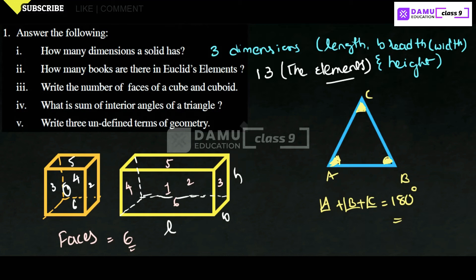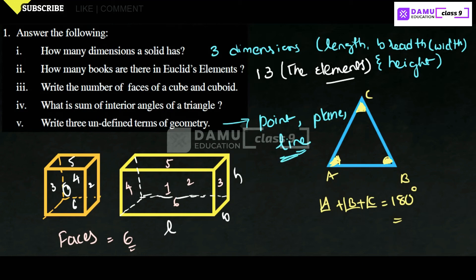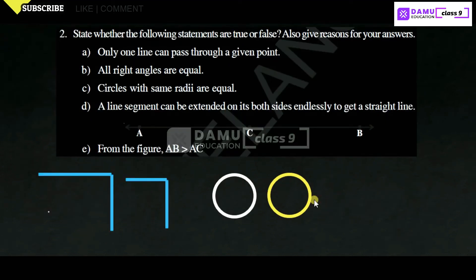Next: write and define the three undefined terms of geometry. Undefined terms are those which cannot be defined using dimensions or measurements. The three undefined terms are: point, plane, and line. We use these to define all other geometric terms, but point, plane, and line themselves cannot be defined.